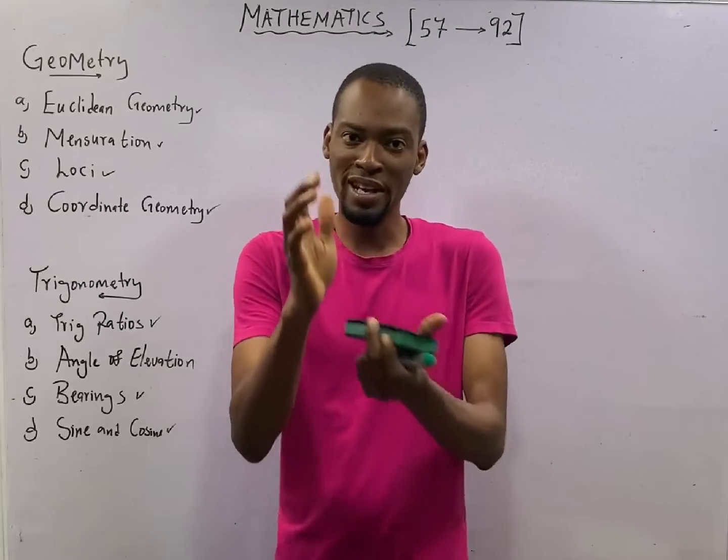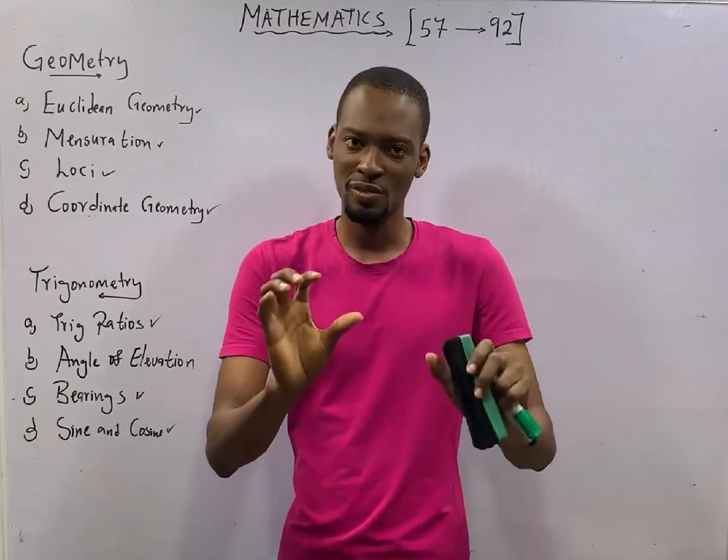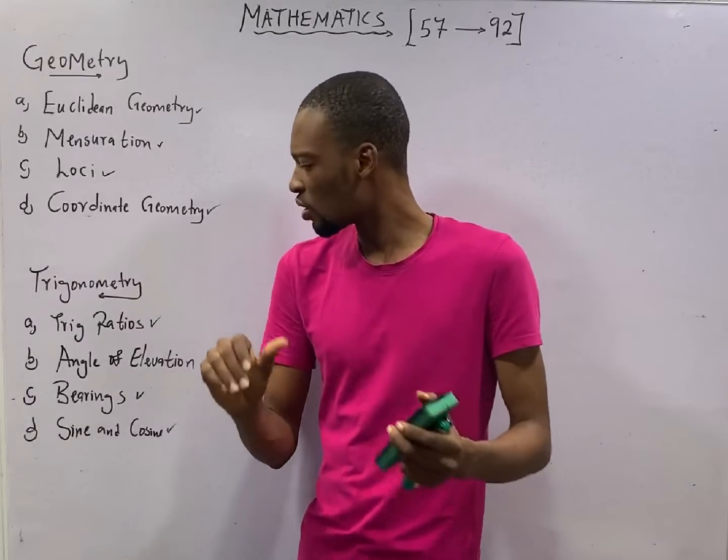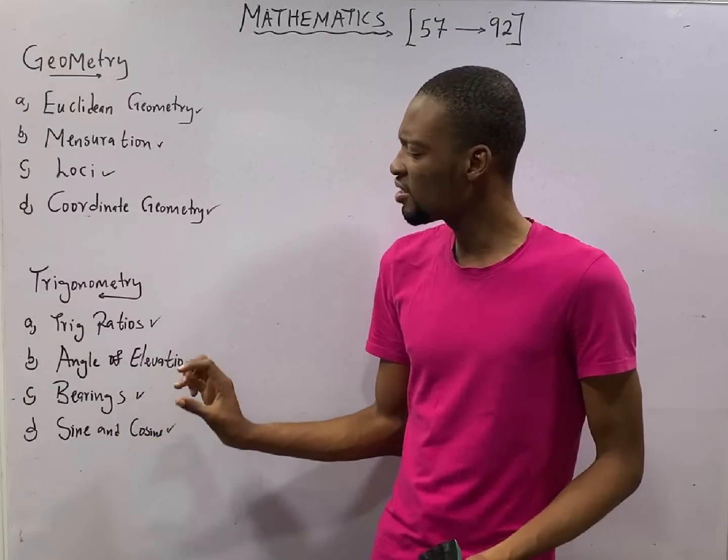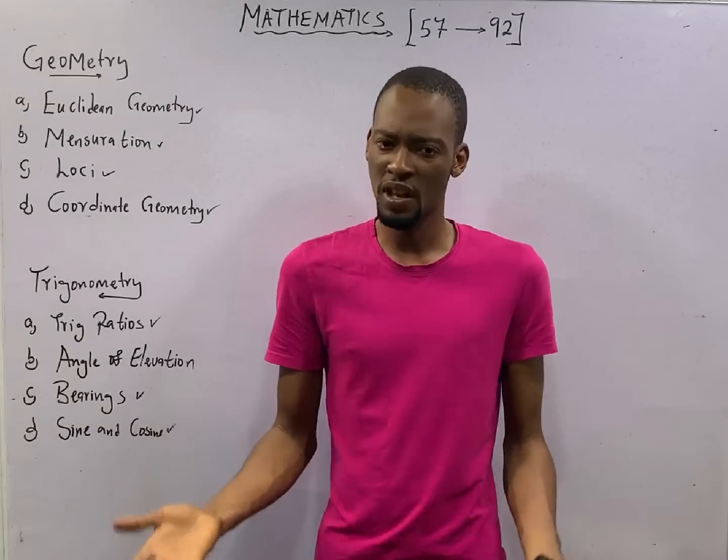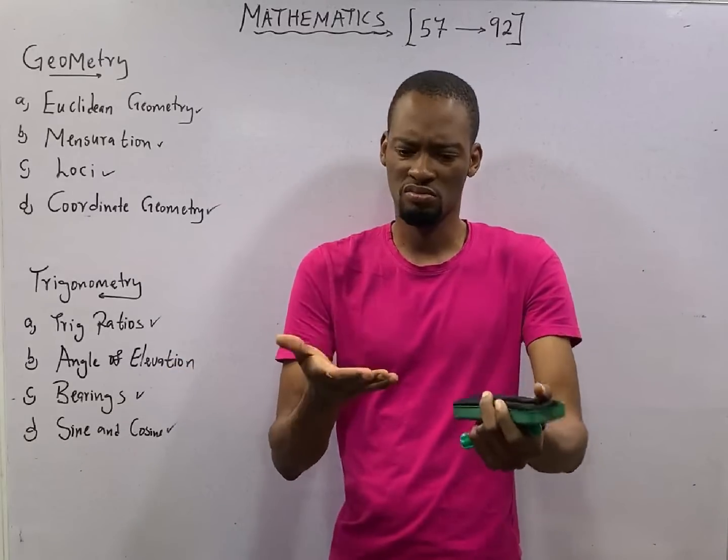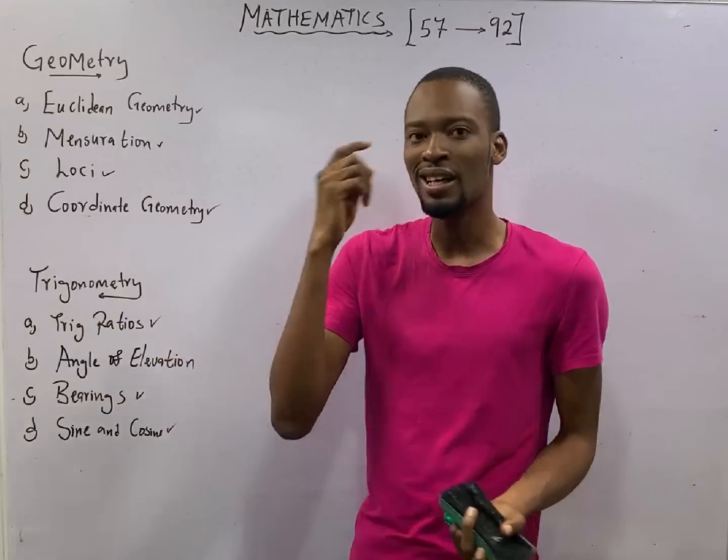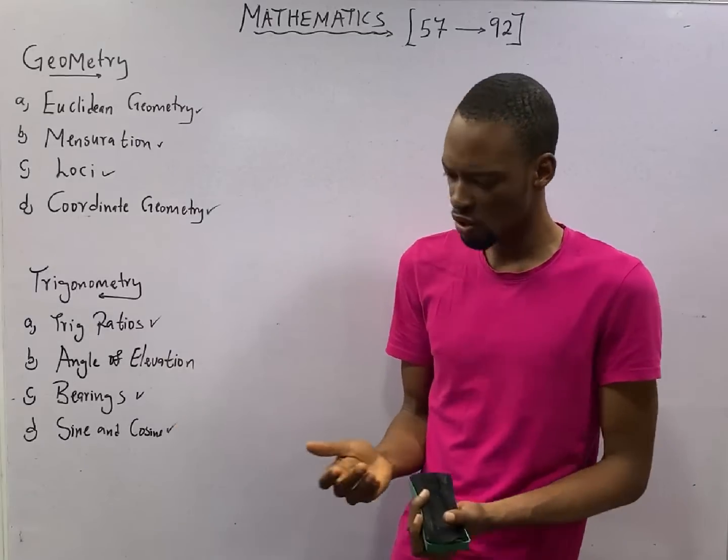This is episode number 81 of the 120 Days to JAMB Mathematics with Flash Isaac. In this episode, we shall be looking at angle of elevation and depression. This is a very simple concept topic in mathematics. What you need is knowledge of triangle, right-angled triangle, and trigonometry plus a little touch of common sense. With these three skills, you are good to go.